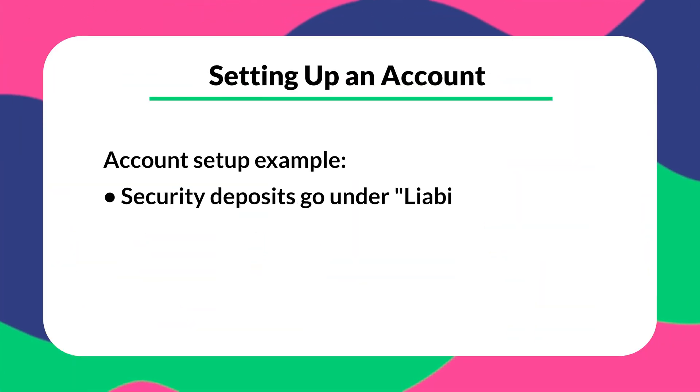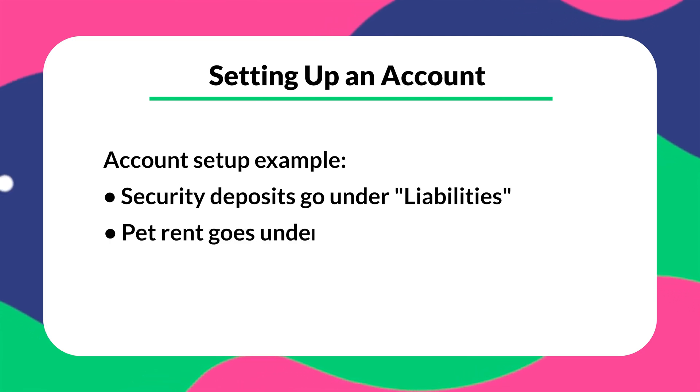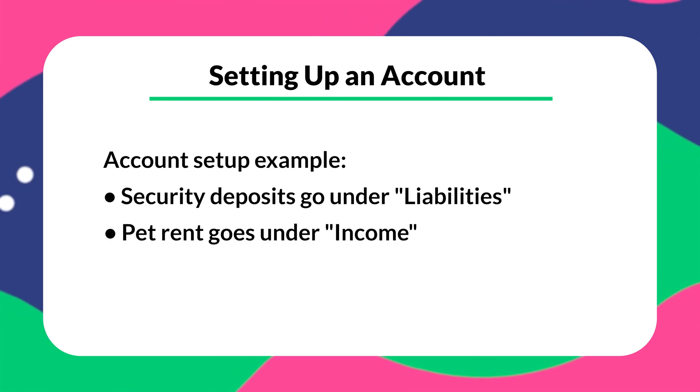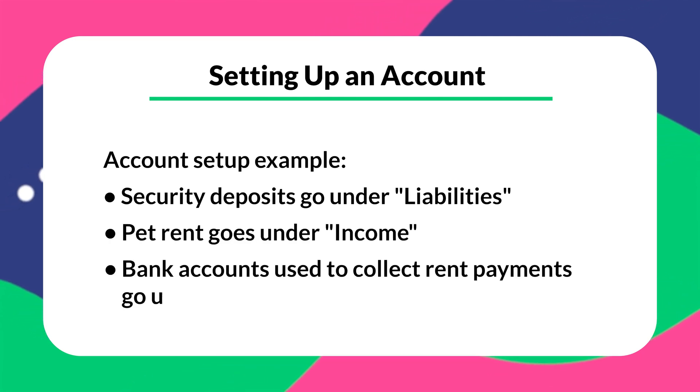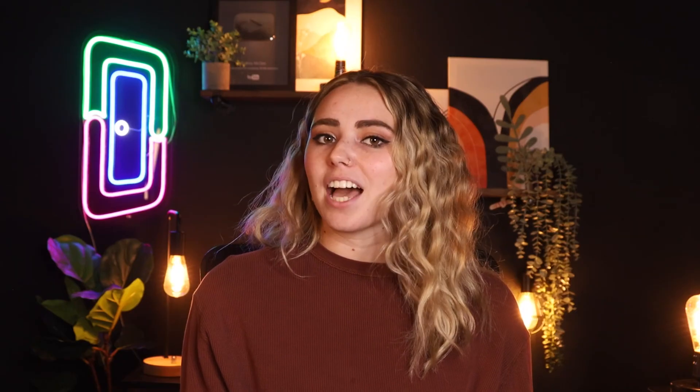For example, security deposits go under Liabilities, pet rent goes under Income, while the bank accounts you use to collect rent payments go under Assets. And with that, you're ready to go.